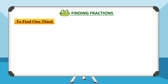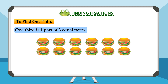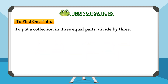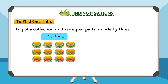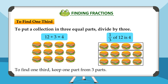To find one-third: one-third is one part of three equal parts. To put a collection into three equal parts, divide by three. Twelve divided by three is equal to four. One-third of twelve is four. To find one-third, keep one part from three parts.